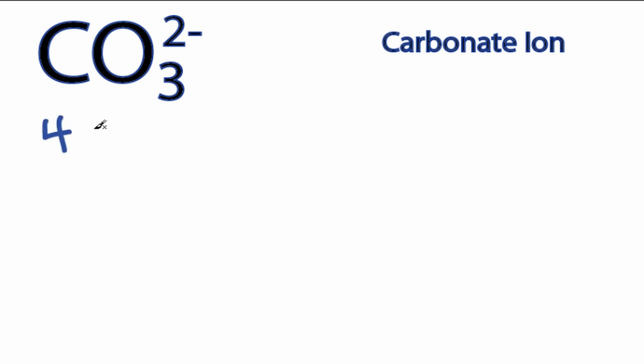Carbon has 4 valence electrons, oxygen has 6, we have 3 oxygens, and this negative 2 means we have an extra 2 valence electrons.